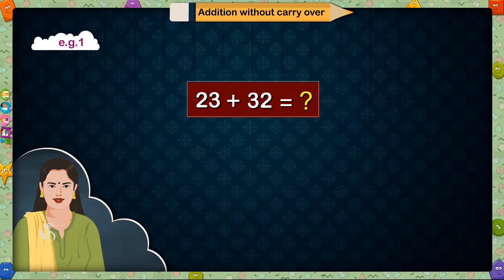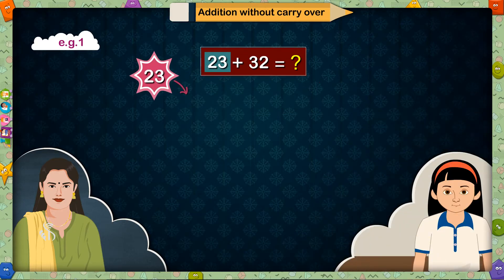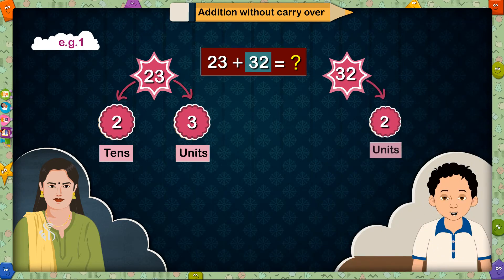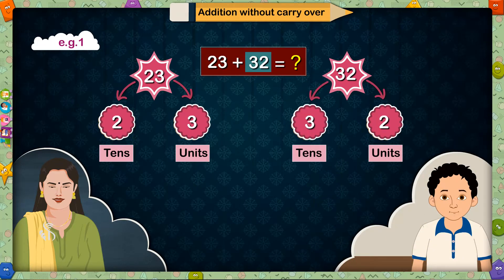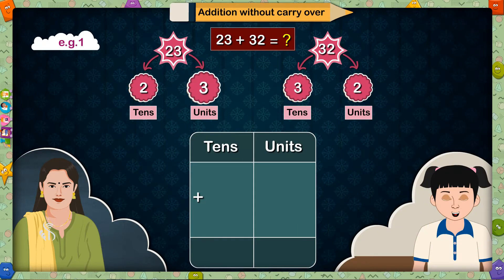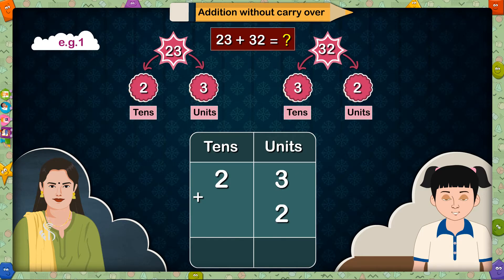Tell me how many tens and how many units are there in 23? Madam, there are 3 units and 2 tens. That's right. Now tell me how many tens and how many units are there in 32? 2 units and 3 tens. Where should I write these numbers? Madam, in 23 write 3 units in the units place and 2 tens in the tens place. For 32, write 2 in units place and 3 in the tens place.